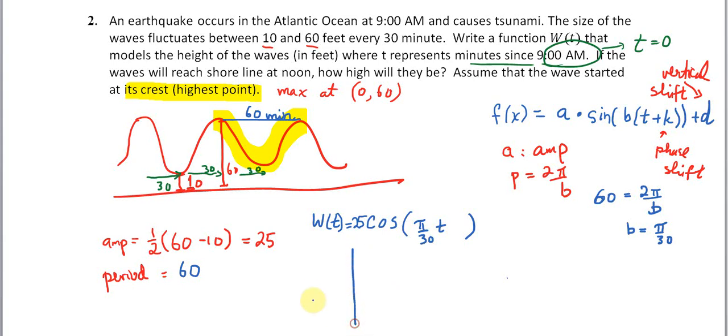And I'm going to leave some space here for some shifting up and down. Now I'm going to graph the intermediate steps here of just 25 cosine of π over 30 times t. So it's going to look like this. It's going to have a max at (0, 25).